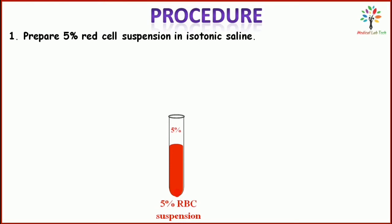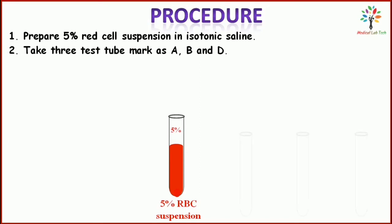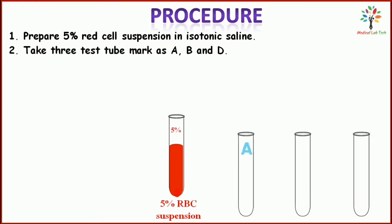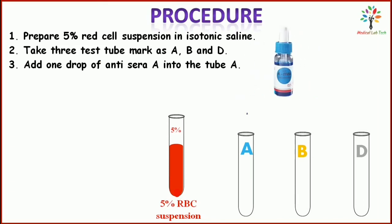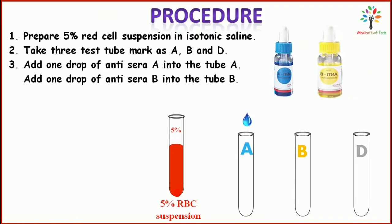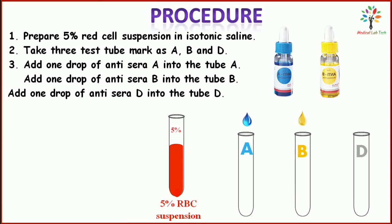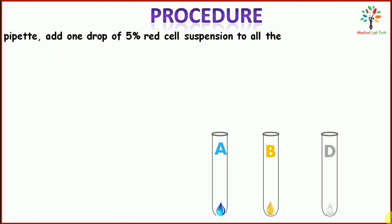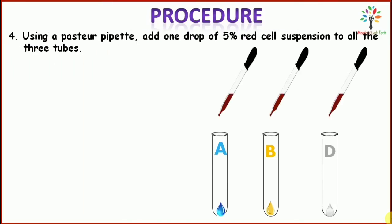In step 2, take 3 test tubes and mark them as A, B, and D. Then add 1 drop of antisera A into tube A, 1 drop of antisera B into tube B, and 1 drop of antisera D into tube D. Using a Pasteur pipette, add 1 drop of 5% red cell suspension into each tube.